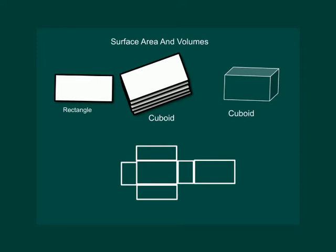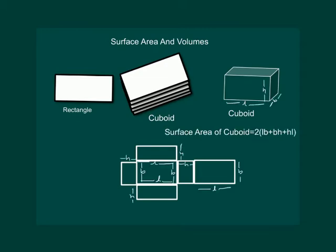Then we would need 4 rectangular pieces to cover the sides. And finally to cover the top we would require another rectangular piece exactly like the one at the bottom. This shows us that the outer surface of a cuboid is made up of 6 rectangles, whose areas can be found by multiplying length by breadth for each of them separately and then adding the 6 areas together. On doing so we get the surface area of a cuboid.